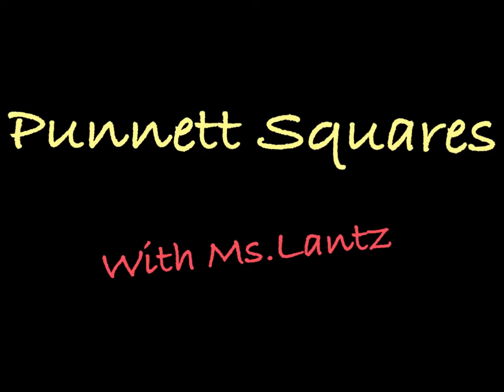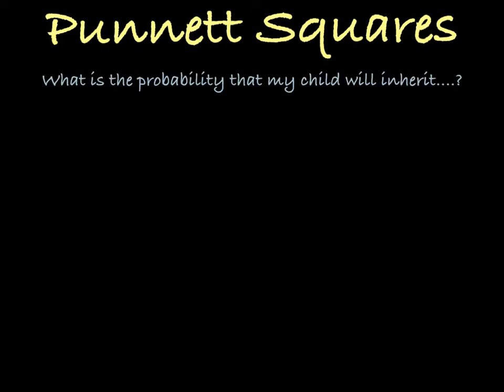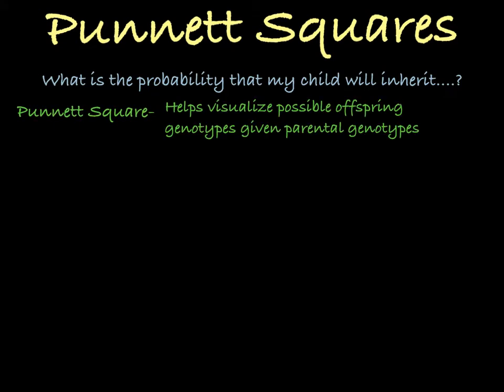In this video, I'll be talking about how to use Punnett squares to predict offspring probabilities. A question doctors and scientists get a lot is, what is the probability that my child will inherit — and you can fill in the blank with any number of diseases or physical attributes. A Punnett square is a quick way to help you figure out the answer to this kind of question. It helps you visualize and determine the chances of having offspring with specific genotypes based on the parent genotypes.